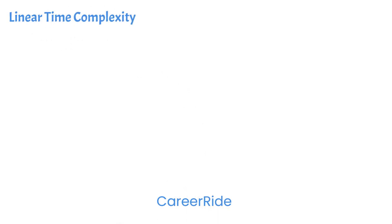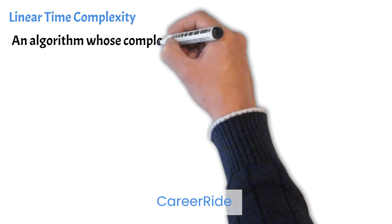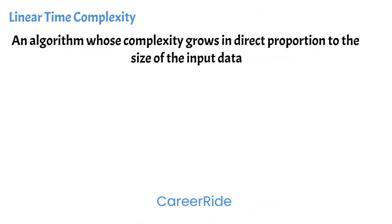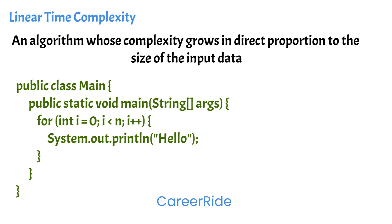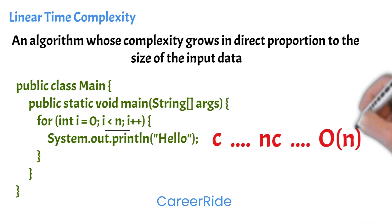Linear time complexity represents an algorithm whose complexity grows in direct proportion to the size of the input data. For example, if you want to print a statement n number of times, it is linear complexity. The number of times the print statement executes is directly dependent on the input value n. The print statement takes constant time c, and since it runs n times, the time complexity is nc. In Big O terms, we ignore constant time and denote linear time complexity simply as O(n).